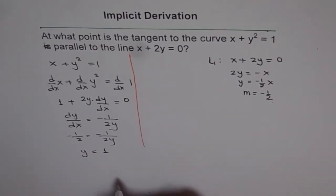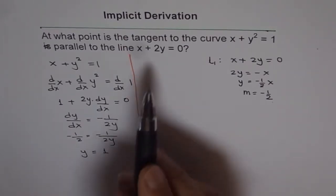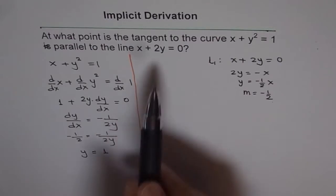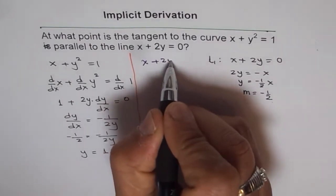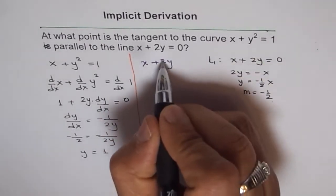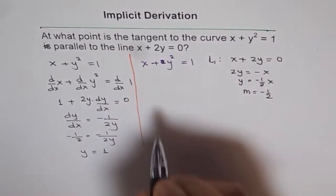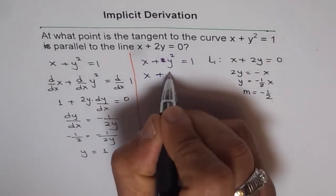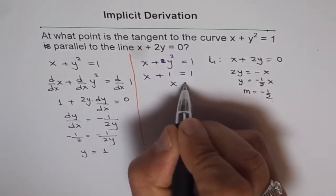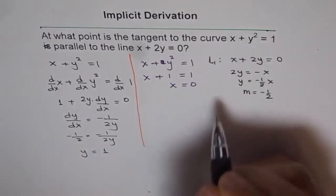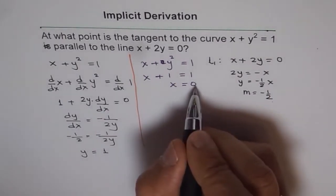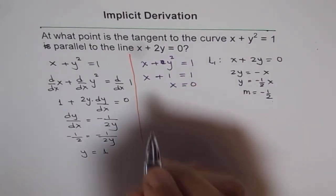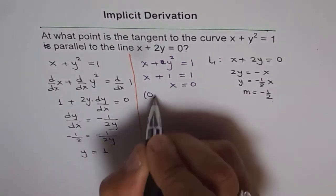So the value of y is 1, and at that point we find the value of x by substituting y equals 1 into the equation. The equation is x plus y squared equals 1, and substituting y as 1 gives x plus 1 equals 1, so x equals 0. Therefore x is 0 and y is 1.